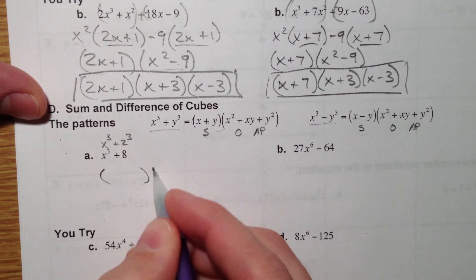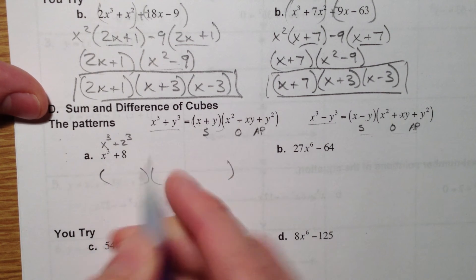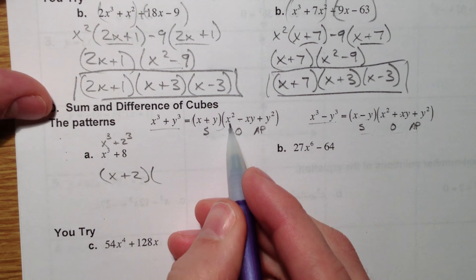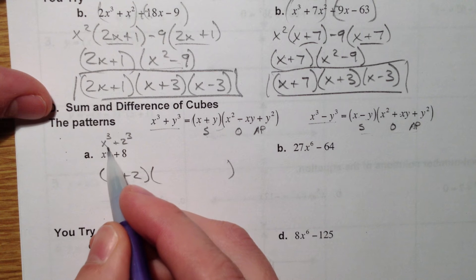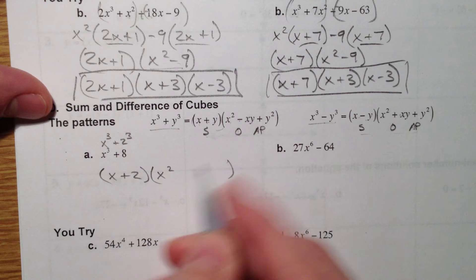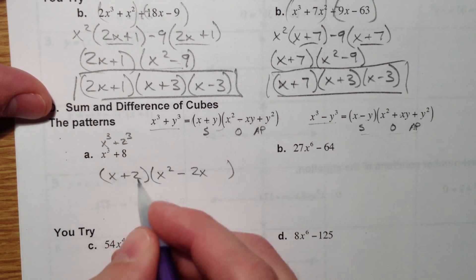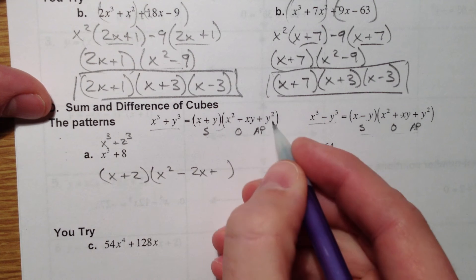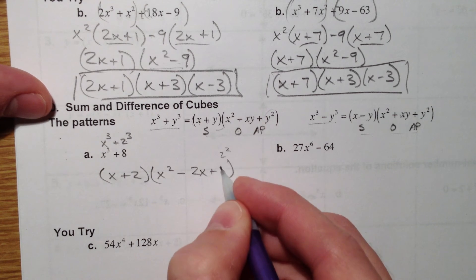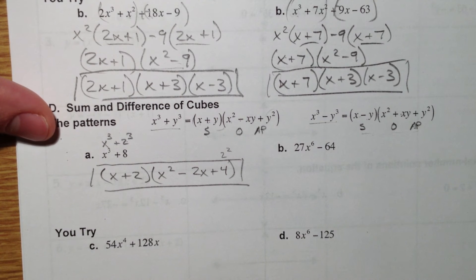So notice that this is x³ and this is 2³. So I'm going to have x + y. What was it that was cubed? So this is x and plus 2. And so x² minus xy, so minus x times y, so 2x. This times this. Plus y² or 2². Which is 4. There you have it.